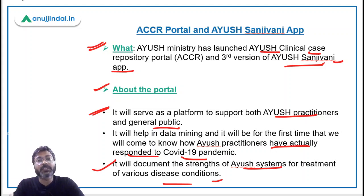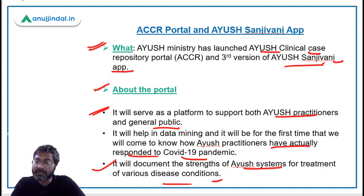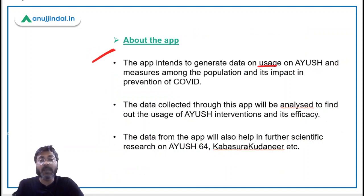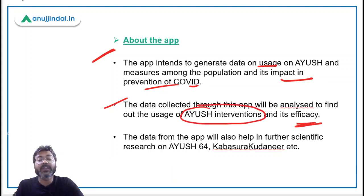The portal will also document the strengths of Ayush systems for treatment of various disease conditions — essentially collecting all data related to how Ayush helps in eliminating diseases. The Ayush Sanjivani app intends to generate data on the usage of Ayush measures among the population and their impact in the prevention of COVID-19. The data collected will be analyzed to find out the usage of Ayush interventions and their efficacy.